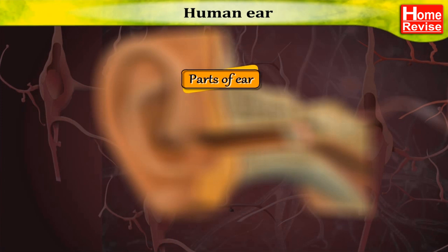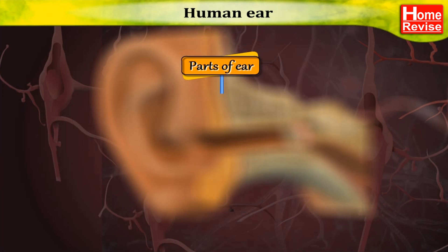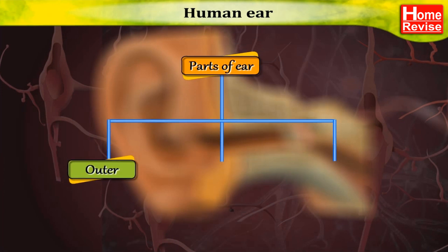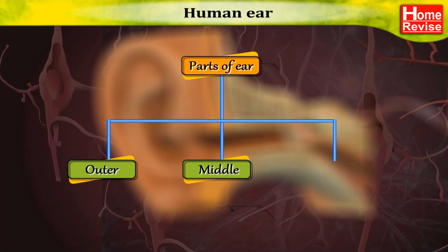The ear can be divided into three parts: 1. Outer Ear, 2. Middle Ear, 3. Inner Ear.